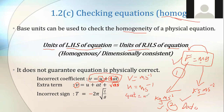a is meter per second squared, and acceleration times time gives seconds, so you end up getting meter per second. The left-hand side unit is meter per second, the right-hand side units are also both meter per second. Therefore this first equation is homogeneous.